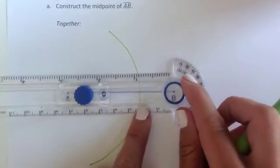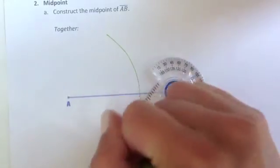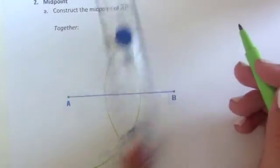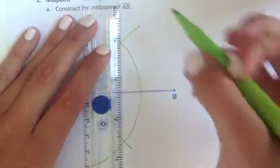Switch. Swing above and below again. Construct that bisector, the perpendicular line.